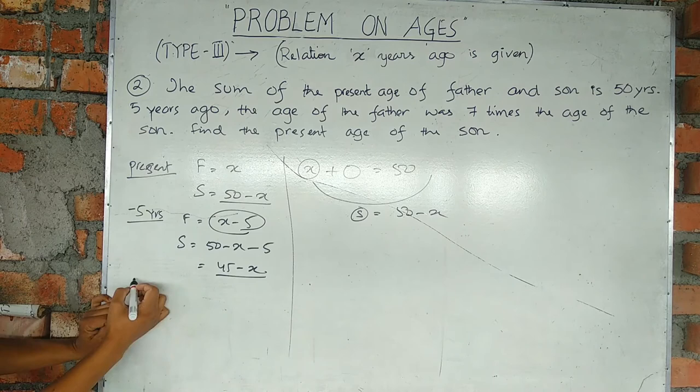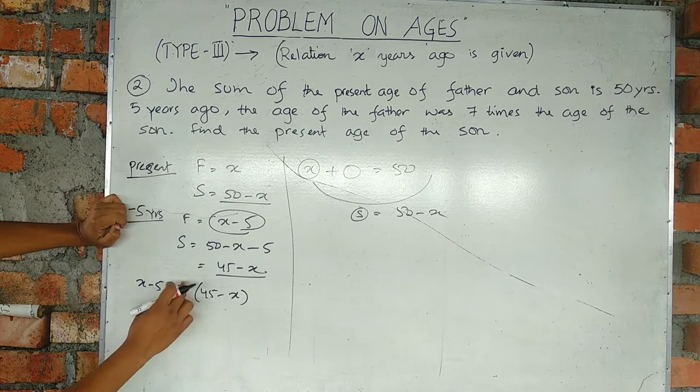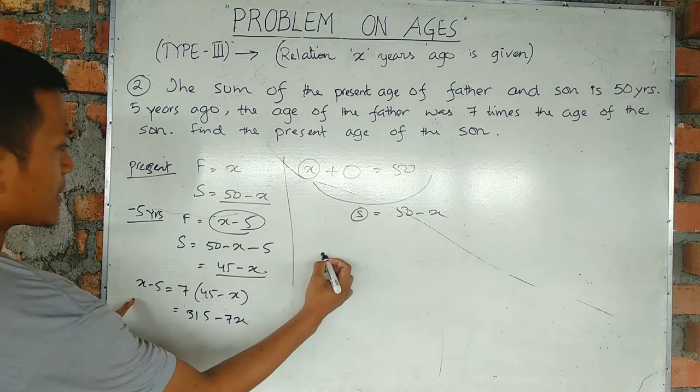7 times 45 is 315, so we get 315 minus 7x. x plus 7x equals 315 plus 5 equals 320. 8x equals 320.